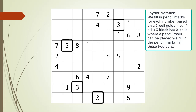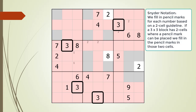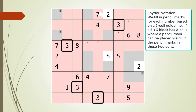Next, we work on the number 3. All the cells having a 3 as a given or a value are now outlined in black. Based on the cells that are outlined, all the cells that cannot have 3 as a pencil mark are now highlighted in red. Consequently, all the cells that can have a 3 as a pencil mark are now highlighted in gray. Block 1 and block 9 have exactly two cells highlighted in gray, so we fill in the pencil marks for the number 3 in those blocks.